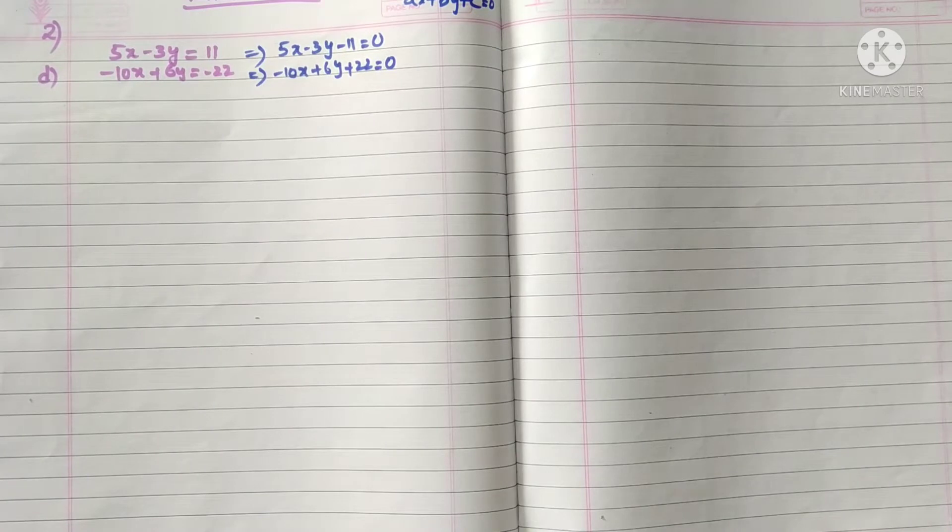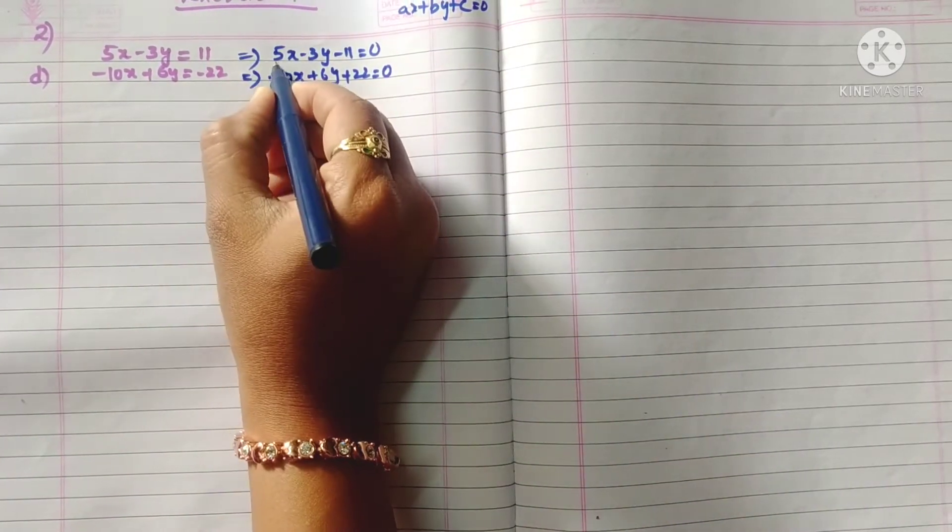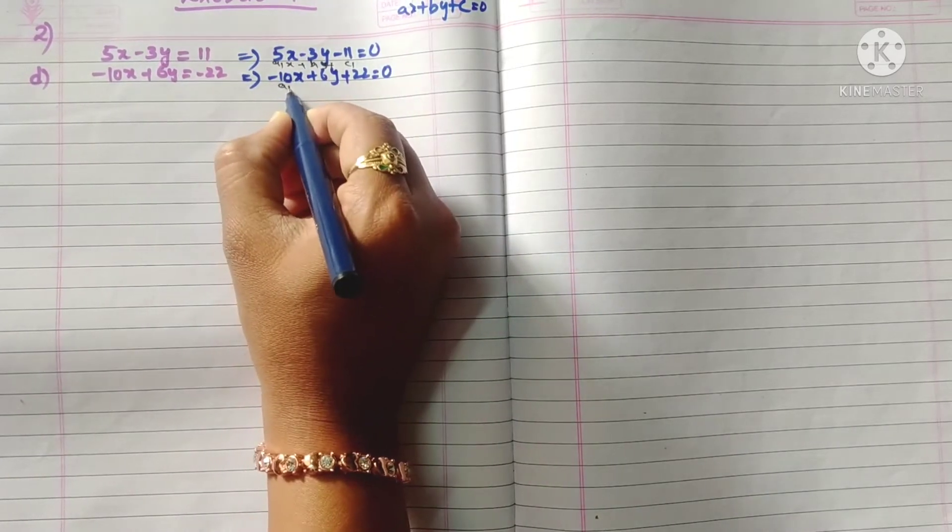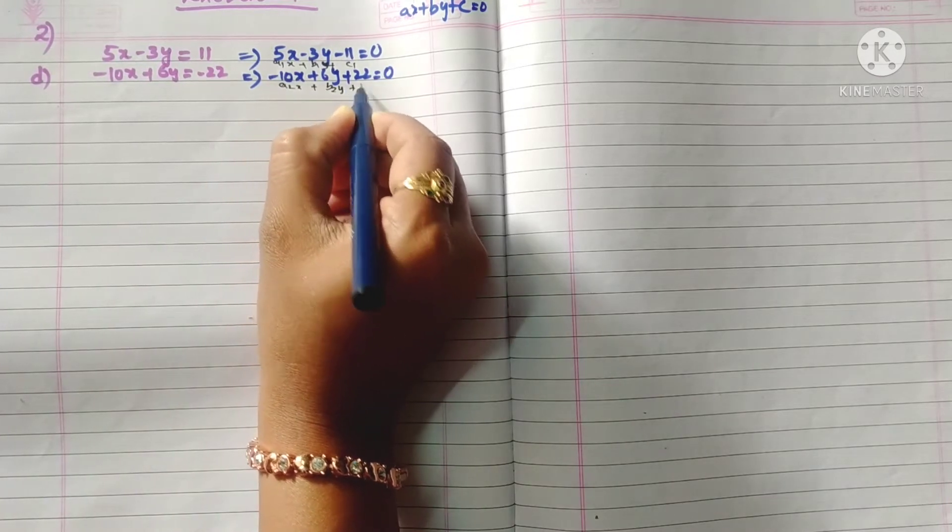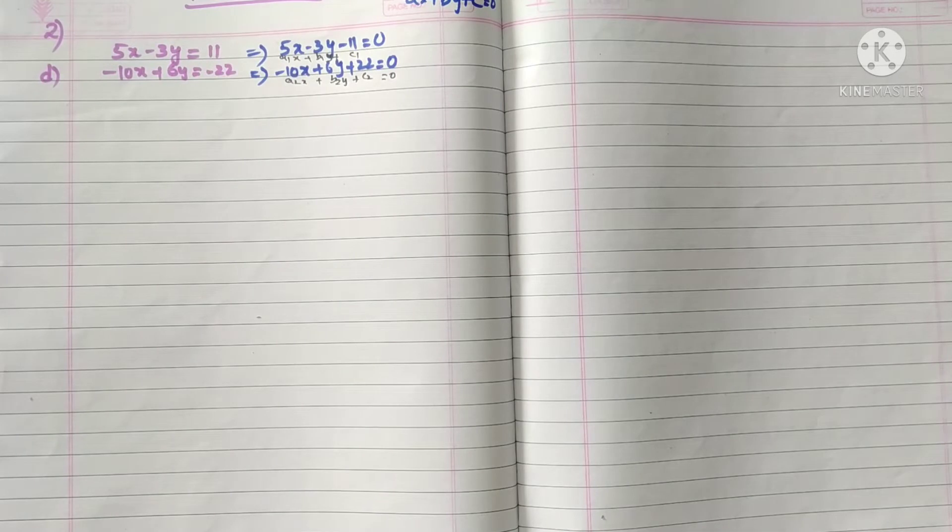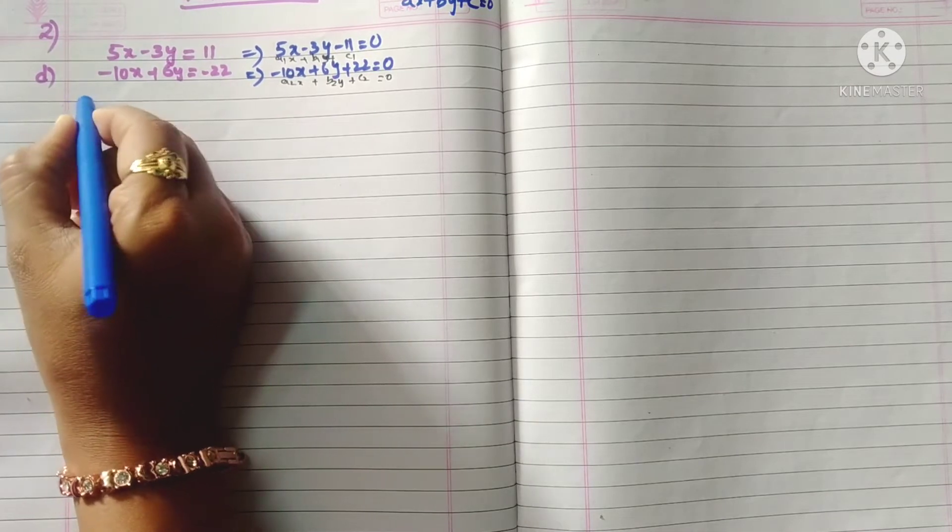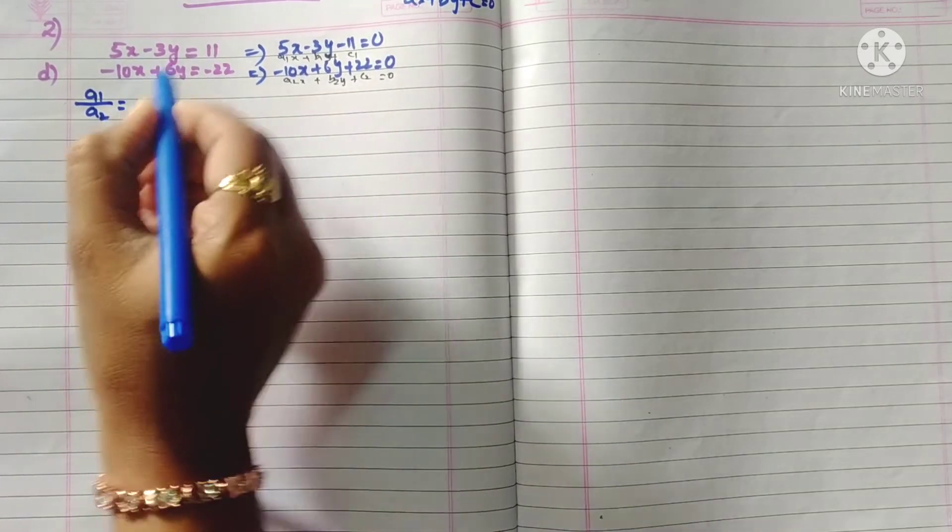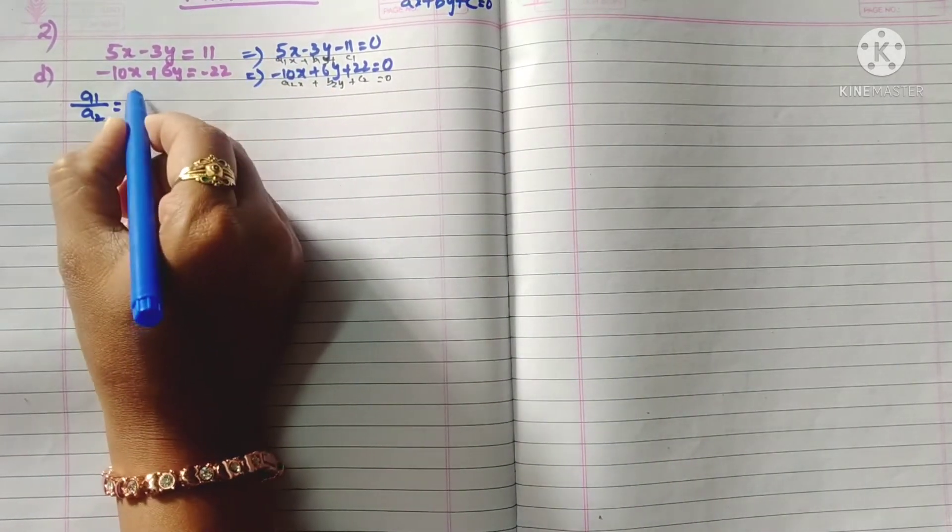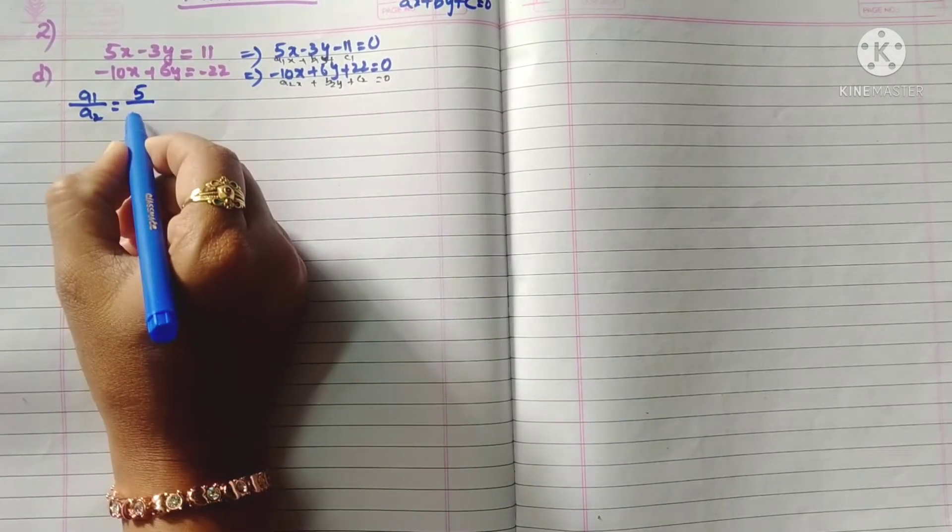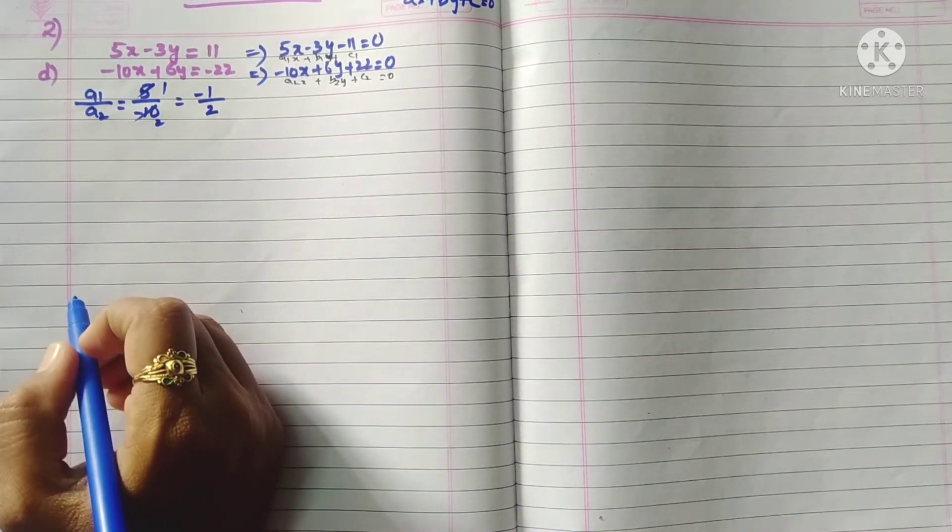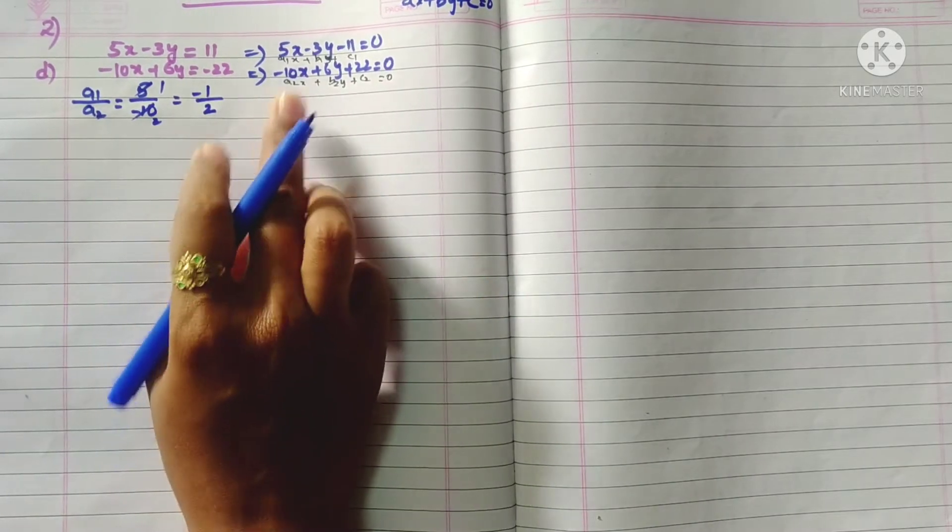Now we have to compare this with a1x plus b1y plus c1 equals zero and a2x plus b2y plus c2 equals zero. The value of a1 is 5, a2 is minus 10, so a1 by a2 equals 5 by minus 10, which is minus 1 by 2. Now b1 by b2: b1 is minus 3, b2 is plus 6, so this is also minus 1 by 2.